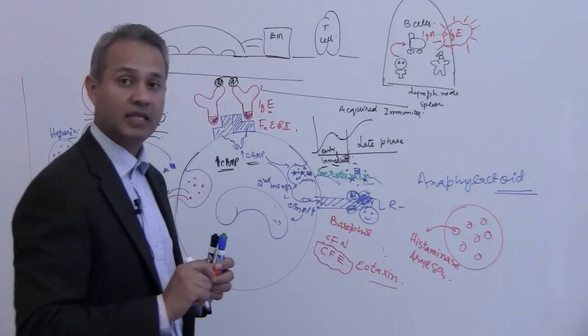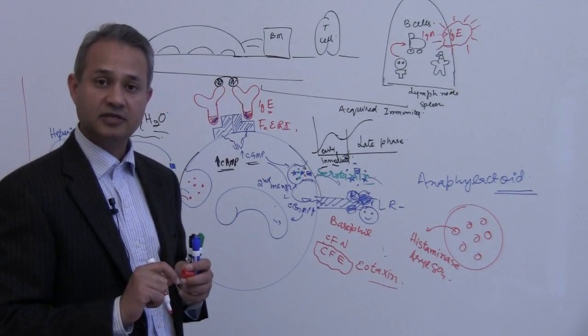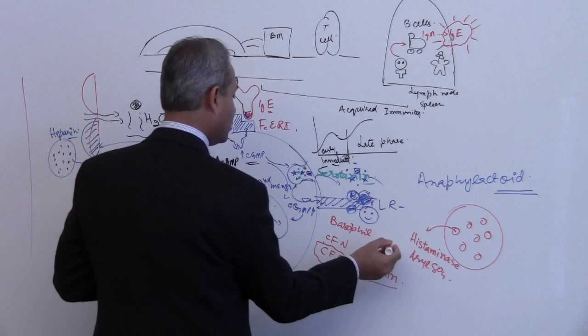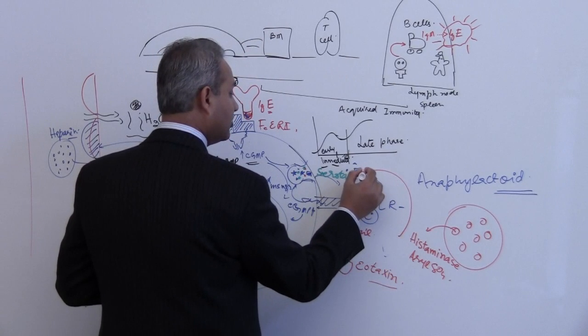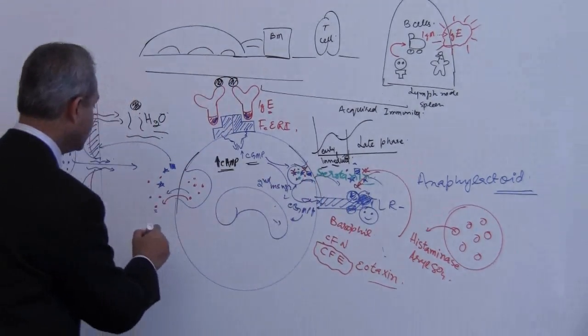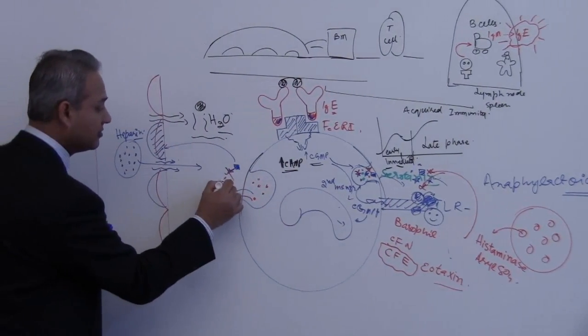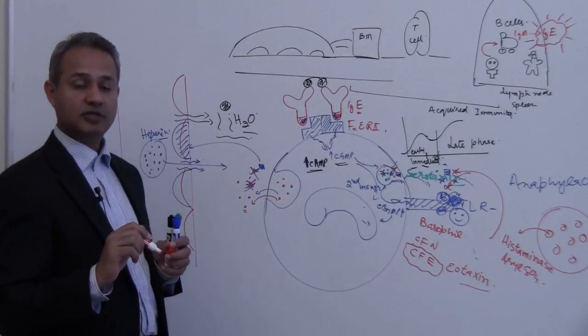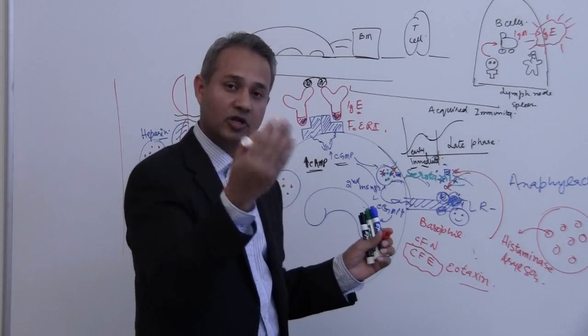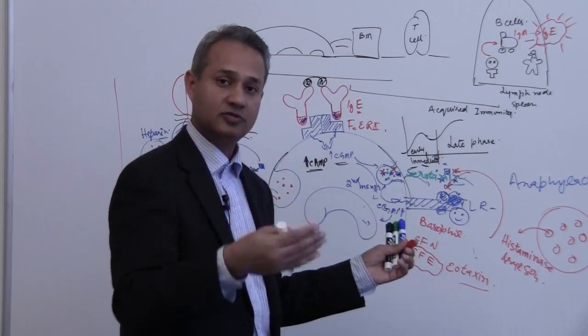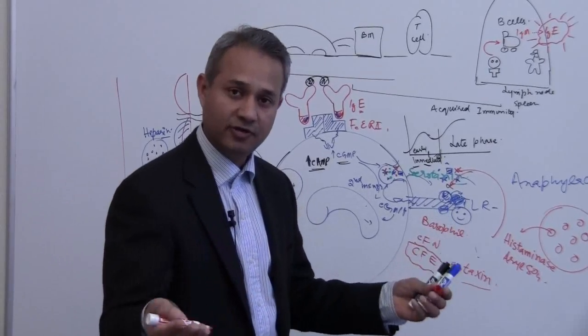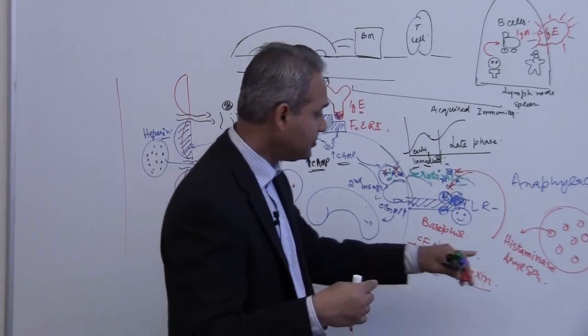What do these two substances do? Histaminase would go and act on the histamine and neutralize it, so one action: histaminase would act on the histamine and neutralize it. This is how it would try to contain the action of the mast cells. Remember I said that the mast cells are going to call the eosinophils to come and do the function.